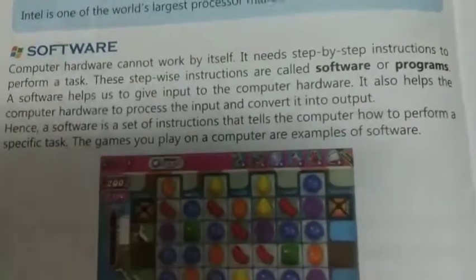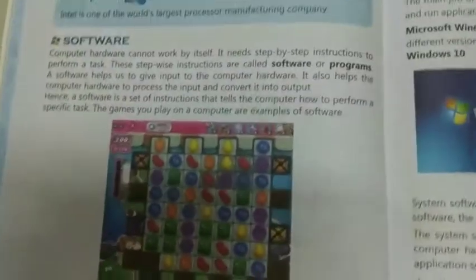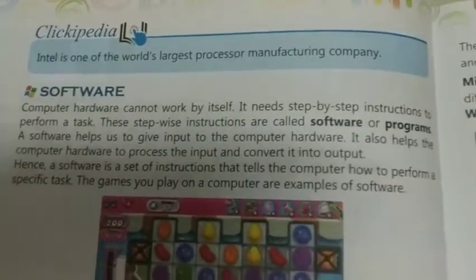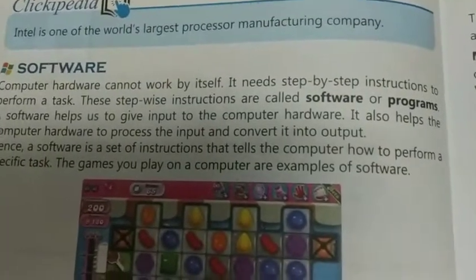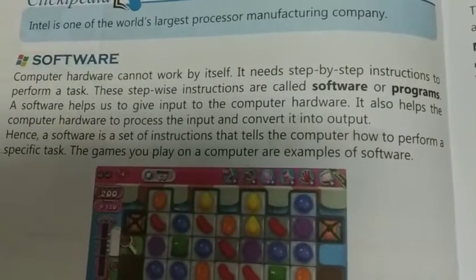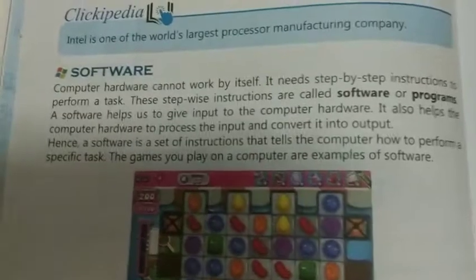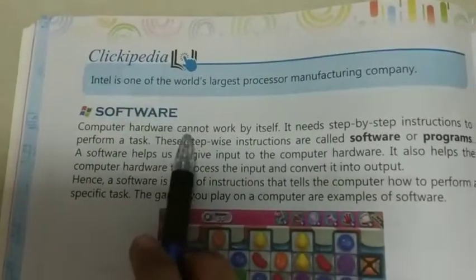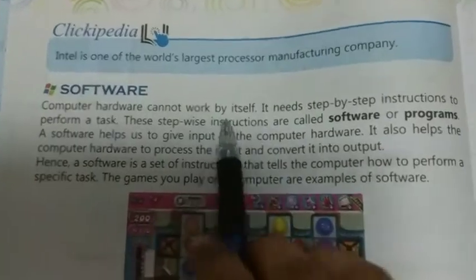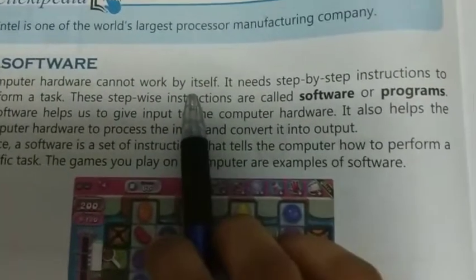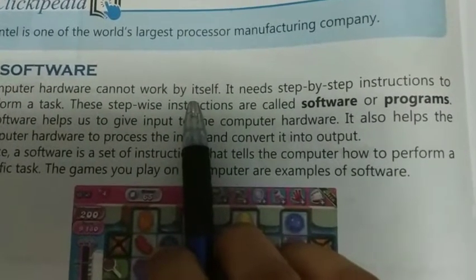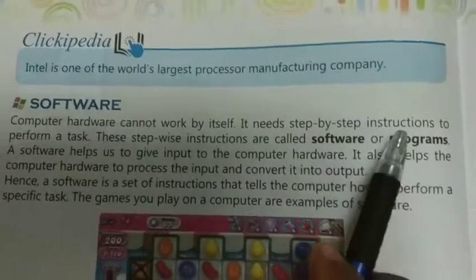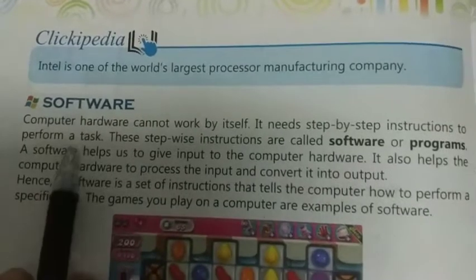Next topic है Software। Software क्या है — जिसे हम छू नहीं सकते। Hardware में computer के जिन parts को हम छू सकते हैं, Software वे हैं जिन्हें हम छू नहीं सकते। Computer hardware cannot work by itself — computer hardware अपने आप काम नहीं कर सकता।